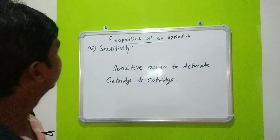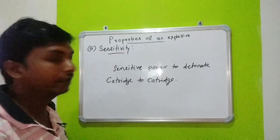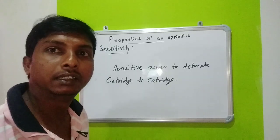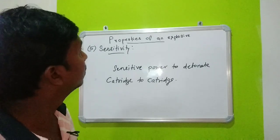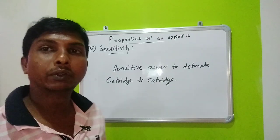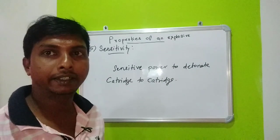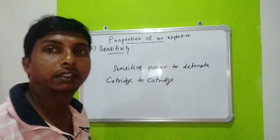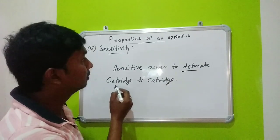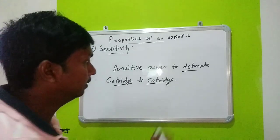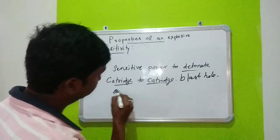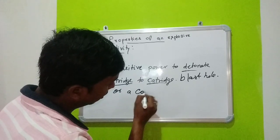Next, the fifth property is sensitivity. Sensitivity means an explosive must be insensitive enough during normal handling and friction, but must have sufficient sensitive power to detonate cartridge to cartridge in a blast hole or a column of charge.